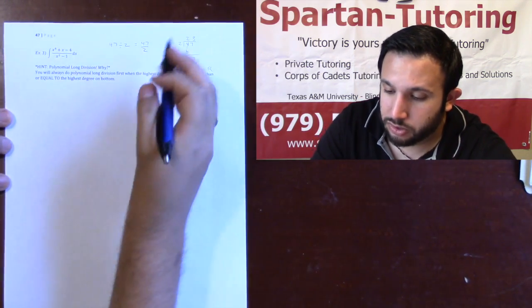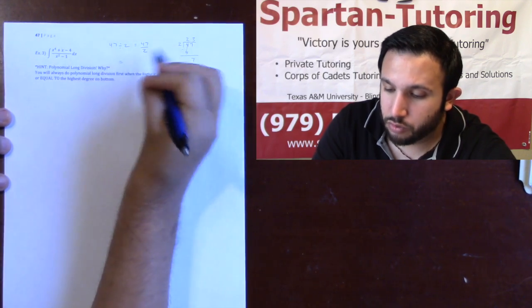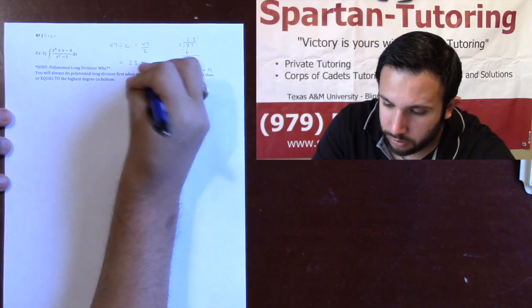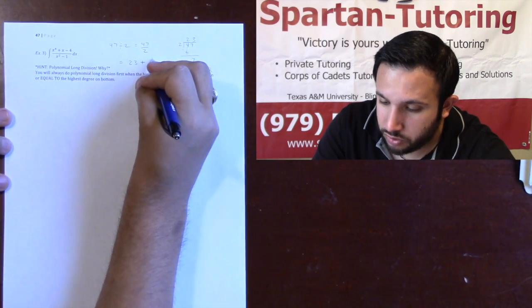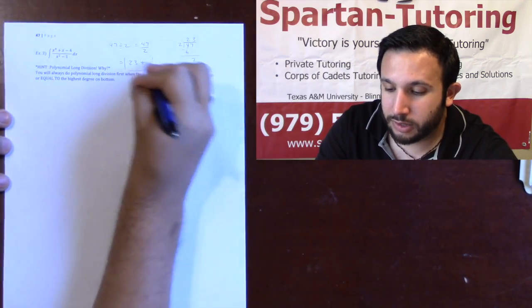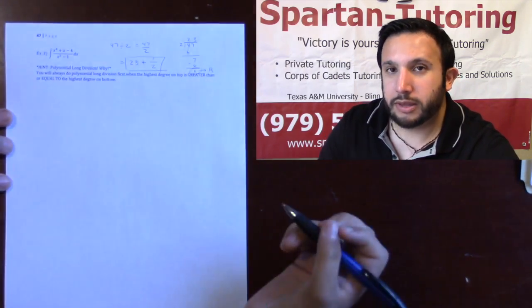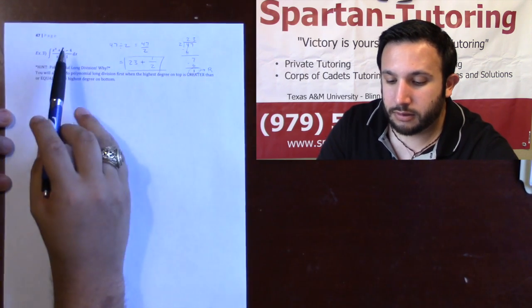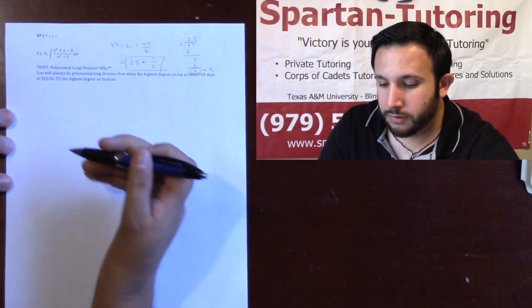And so, your final answer, the way that you would write it, is you'd write this as whatever is on top, which is 23, plus my remainder, which is 1 over what was originally on bottom. And so, 47 divided by 2 is 23 plus 1 half. I'm going to do the exact same thing, but now for polynomial long division, okay?